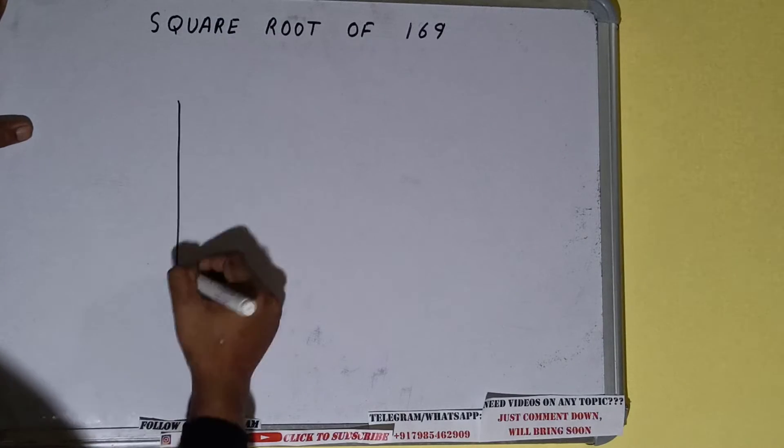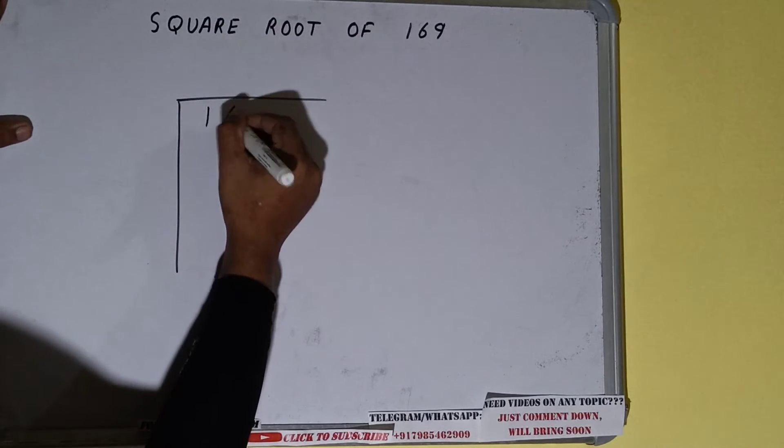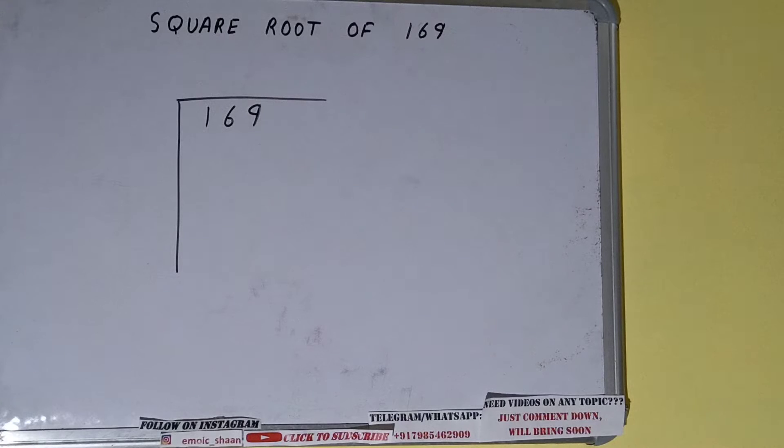First we need to write the number like this: 169. The next thing we need to do is form pairs from the right hand side. So one pair will be this and this one will be left out.